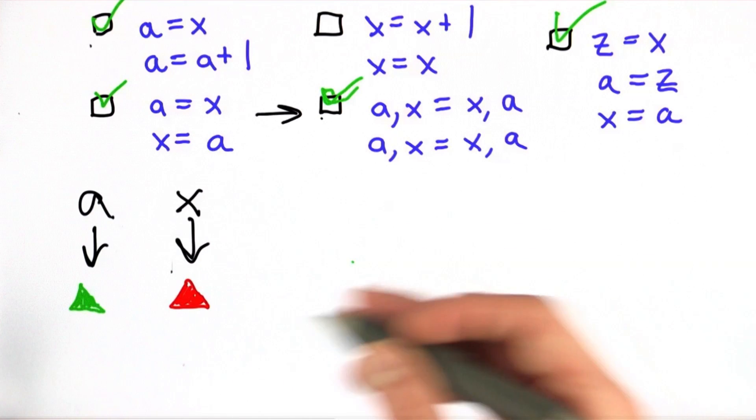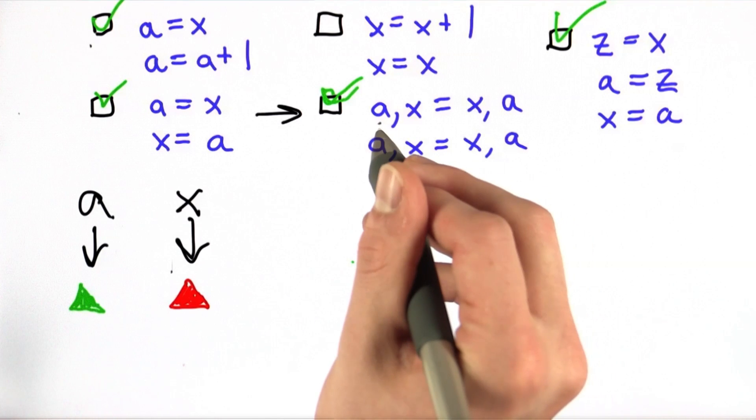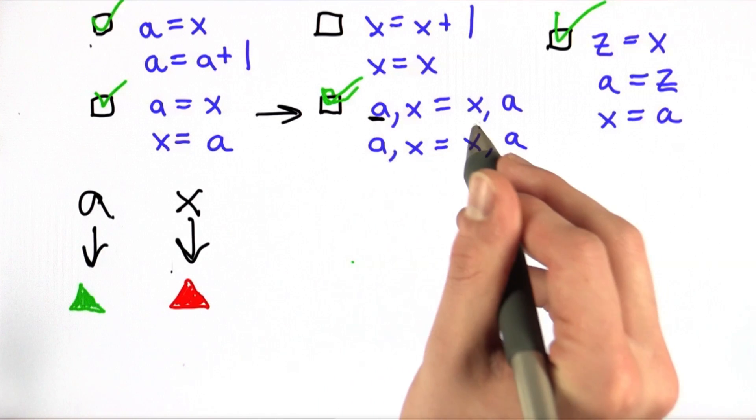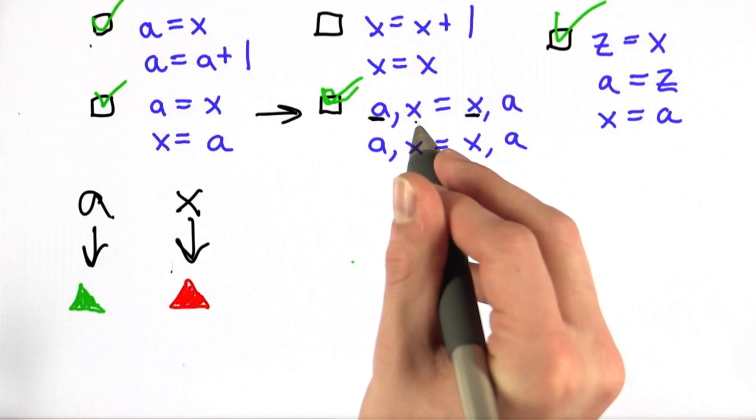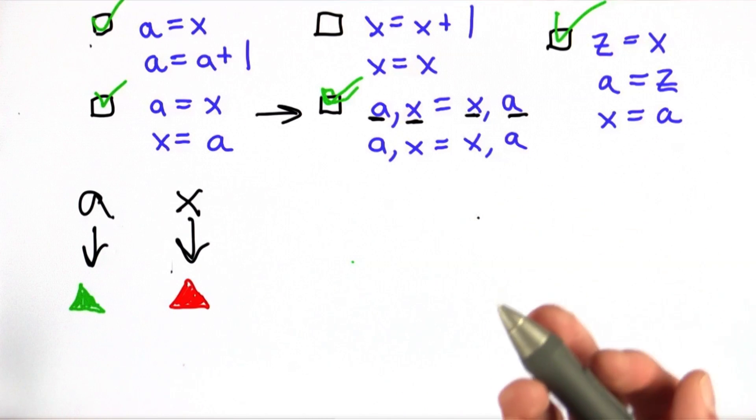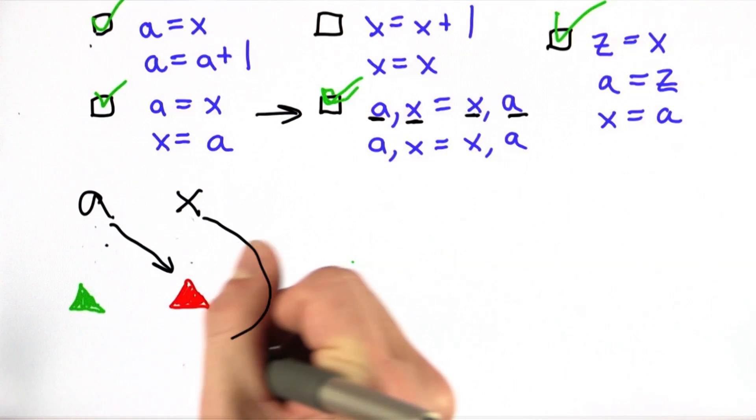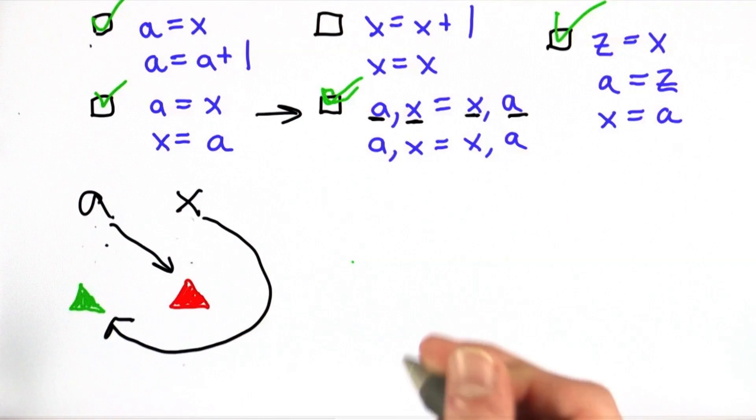This first choice may be a little bit of Python that you haven't seen before. What this says is A should equal X and X should equal A. The end result is that X and A swap. So let's see what that looks like. I'll draw this all the way around here. X and A have swapped values—X now refers to the green triangle and A to the red triangle.